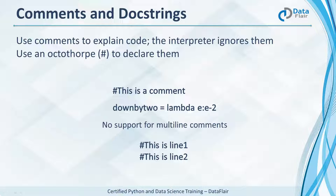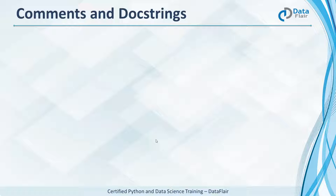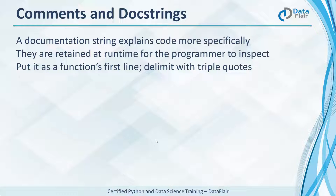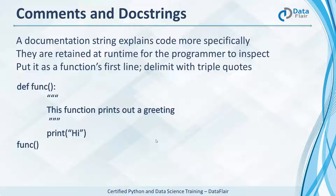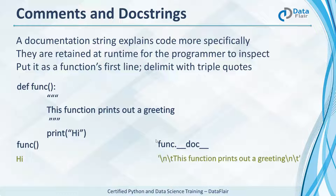As you can see on screen, these are two lines of comments. While comments help explain code, documentation strings do it more specifically. What sets the two apart is that docstrings are retained at runtime — the programmer can refer to them with the __doc__ attribute and inspect them. To define a docstring, we use triple quotes and put it as the first line in a function. Here we define a function 'func' that prints 'hi' with a docstring stating it prints a greeting. The output contains escape characters like \n and \t for new line and tab respectively.